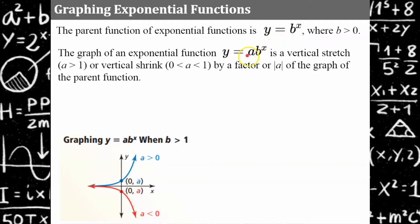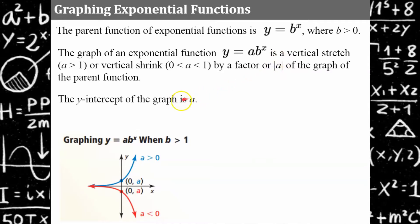Once a is something other than 1, it's a vertical stretch if a is greater than 1, and a vertical shrink if a is between 0 and 1. We describe this as a vertical stretch or shrink by the absolute value of a. The y-intercept of the graph of an exponential function is a. So for the parent function, it's going to have a y-intercept of 1, and for every other function, whatever the value of a is tells you the y-intercept.